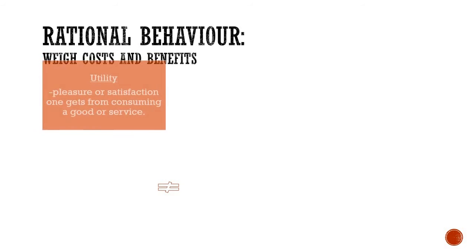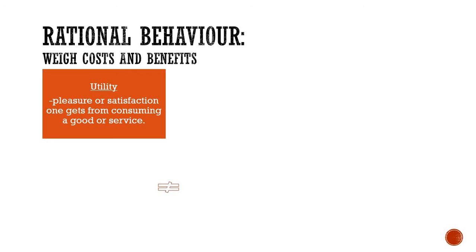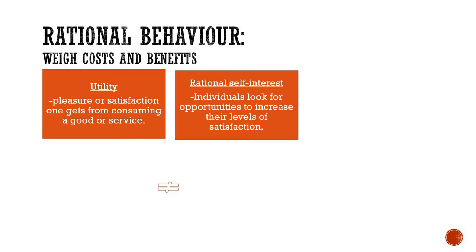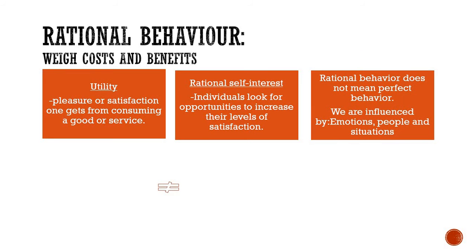When we look at rational behavior, we consider the concept of utility — the amount of pleasure or satisfaction that someone gets from consuming a good or service. We also look at rational self-interest, which is when individuals look for opportunities to increase their levels of satisfaction. Rational behavior is not perfect behavior, because we are always influenced by the people around us, the situations we are facing, and the emotions we are feeling when making a decision. What it does mean is that people's decisions are made with some outcome in mind.